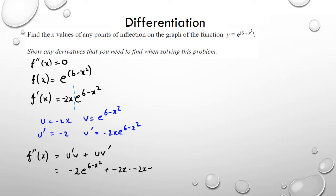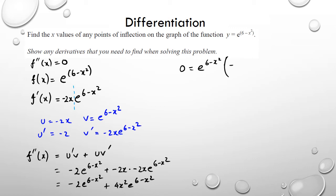So putting this together I've got negative 2 e to the power of 6 minus x squared, plus negative 2x times negative 2x e to the power of 6 minus x squared. Simplifying, I have negative 2 e to the power of 6 minus x squared plus 4x squared e to the power of 6 minus x squared. Setting this equal to zero and taking e to the power of 6 minus x squared as a common factor, I get negative 2 plus 4x squared.